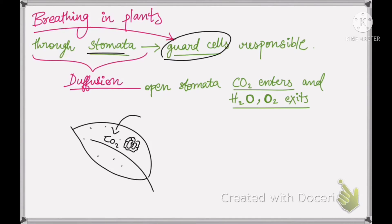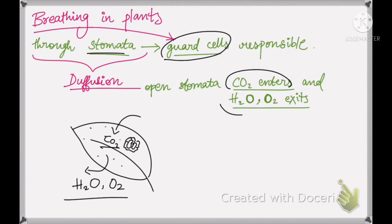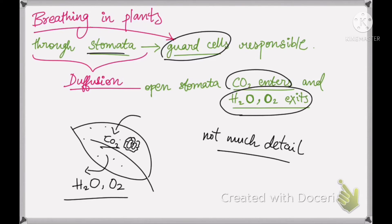Water exits by osmosis and oxygen exits by diffusion. This is how plants take in carbon dioxide and release oxygen. During the night, there is no photosynthesis, so plants exhale CO2. But during the day, photosynthesis is ongoing and plants need CO2, so the major gas released is oxygen.